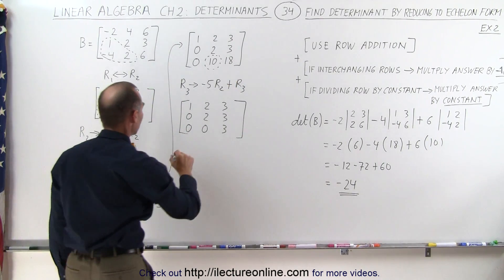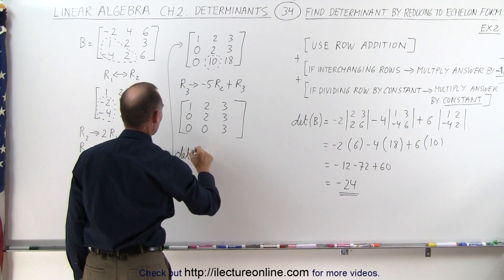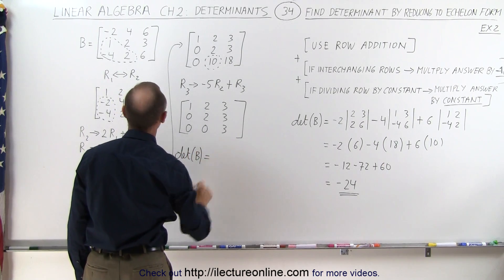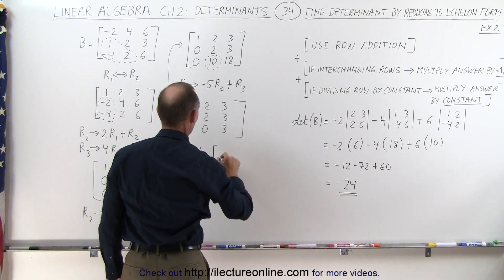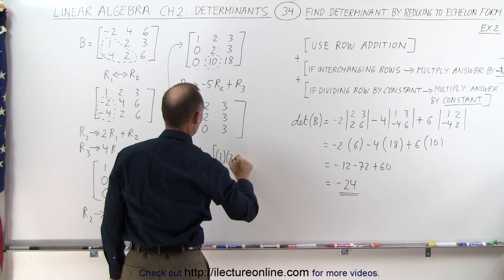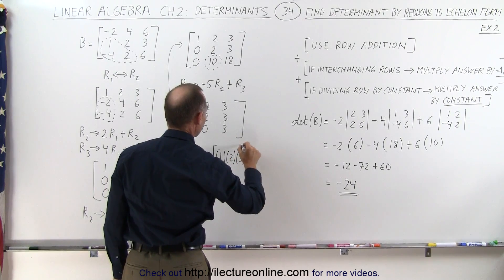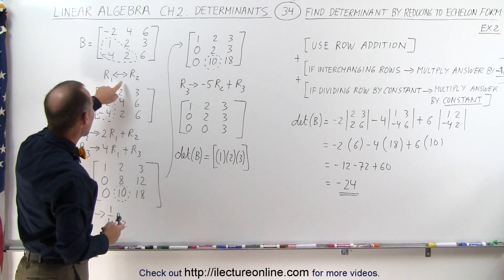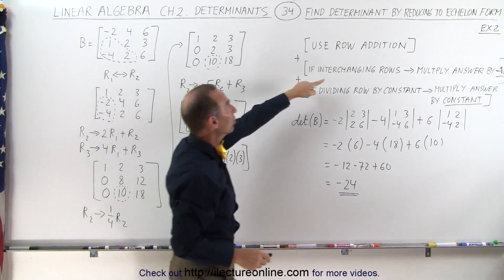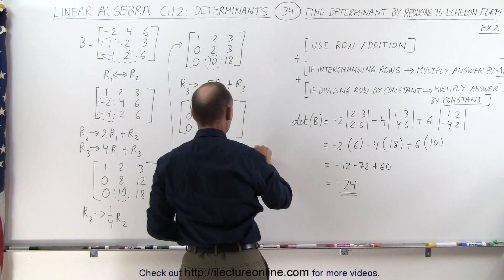Now we can say that the determinant of the original matrix, the determinant of the original matrix B, is equal to the product of the diagonal, which is 1 times 2 times 3. And now we have to keep track of what we did during the process. We had a row exchange. And interchanging of rows means we have to multiply times the negative 1.